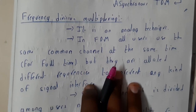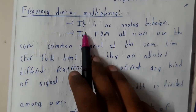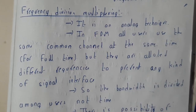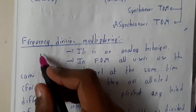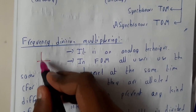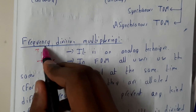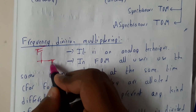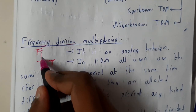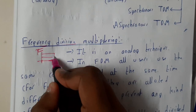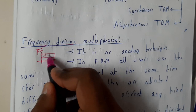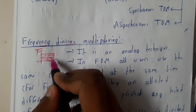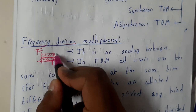Now let us go through frequency division multiplexing. Frequency division multiplexing is an analog technique — please remember this point. From the name itself we can understand it. Here we will be using the relation of time and frequency. Since it is frequency division, we will be allotting a certain frequency for a particular user or process.